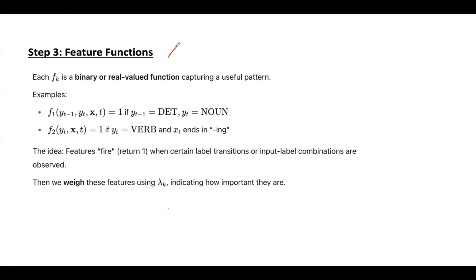Step three covers feature functions, represented by f_k. Their value can be either binary — 0 or 1 — or a real value returning any real number. Each function captures some useful pattern in the data. When a condition is true, the output is 1 and the feature starts firing; if the condition is not true, the output value becomes 0.